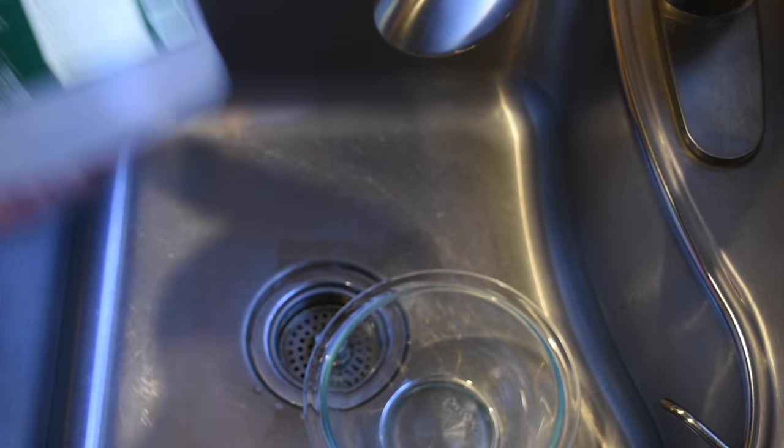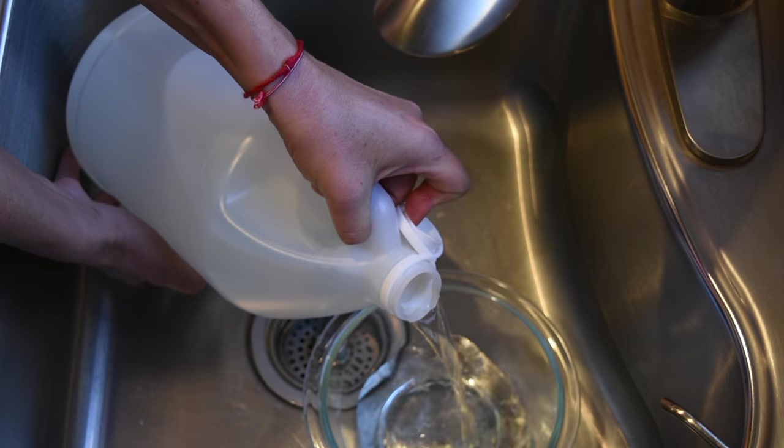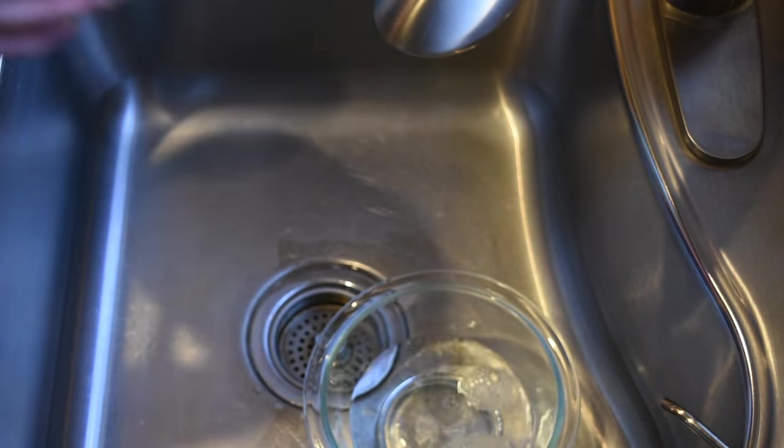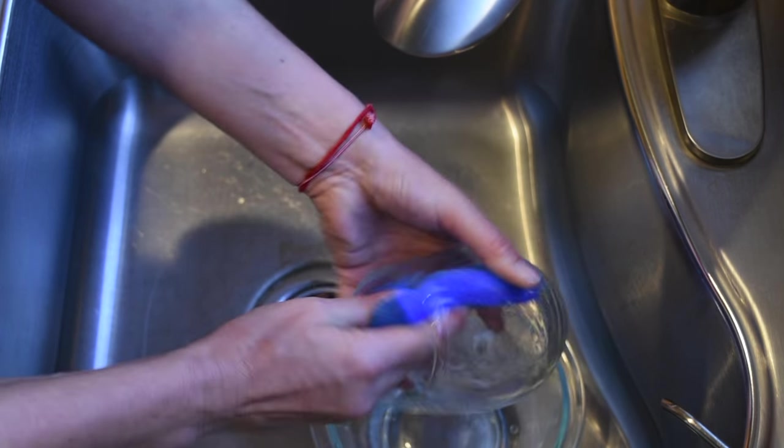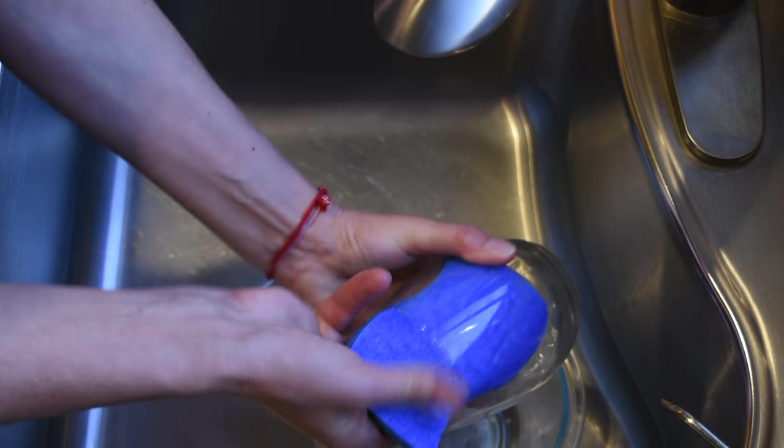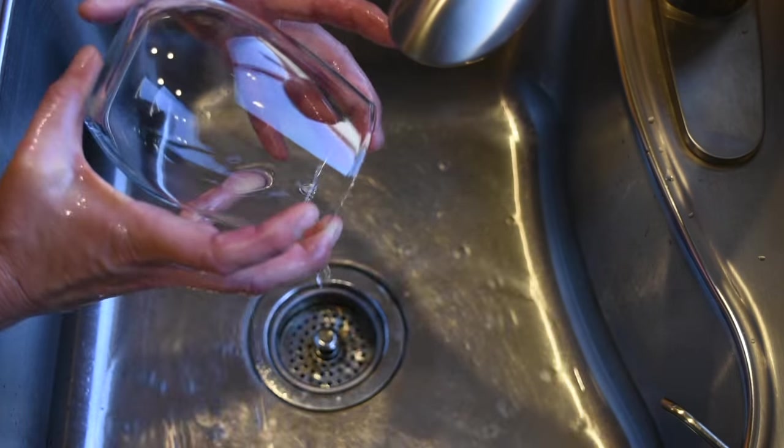So I'll start by pouring about a cup of the Four Monks vinegar into a bowl, and then I will take the sponge and start rubbing the glass. And if there are any tougher spots, you can put a paper towel with vinegar there and just let it sit for a while. But that's it, and then you just rinse the glass.